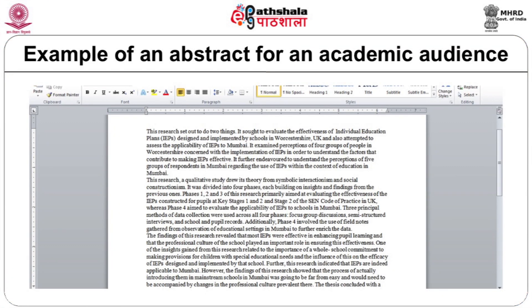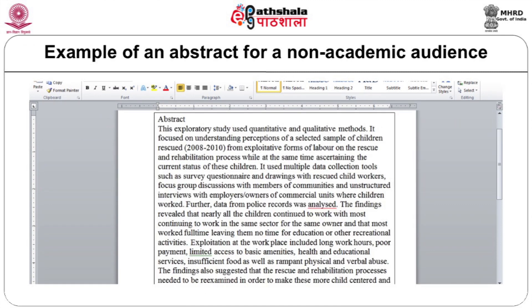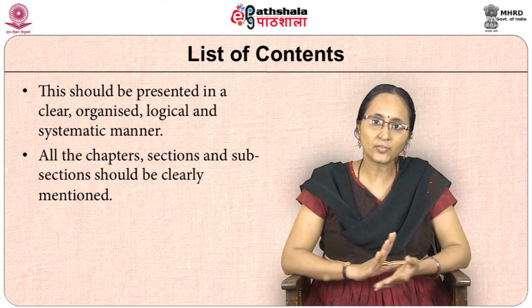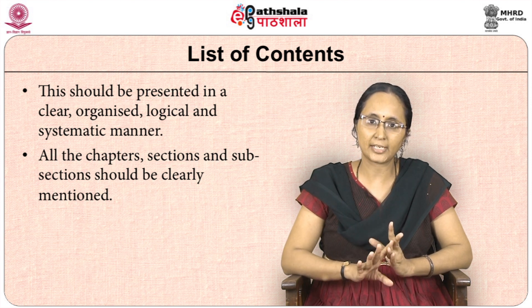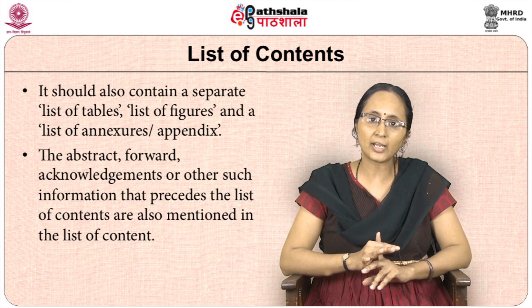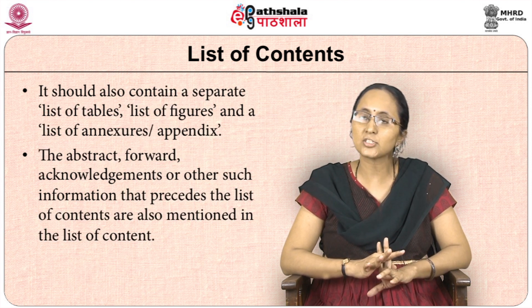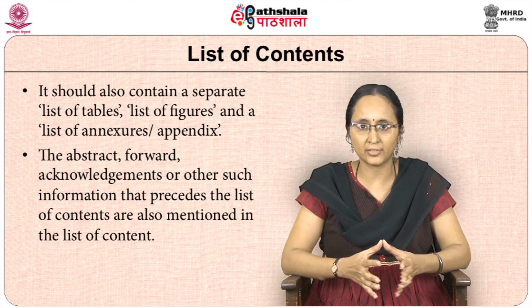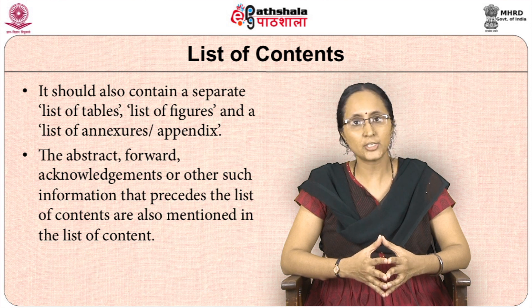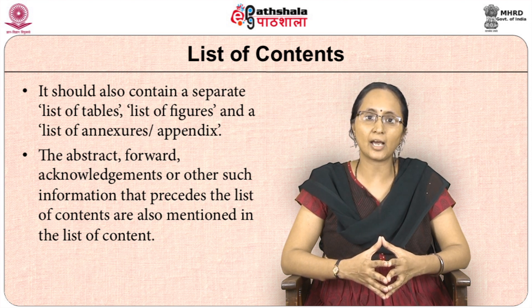There are two examples of abstracts on the screen. The first is an abstract from a PhD thesis for an academic audience; the second is from a study for a non-academic audience, to give you an idea of how abstracts are written. The list of contents should be presented in a clear, organized, logical, and systematic manner. All chapters, sections, and subsections should be clearly mentioned. It should also contain a separate list of tables, figures, and annexures. Page numbers for items preceding the list of contents are normally in Roman numerals.